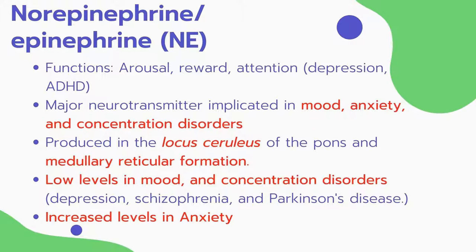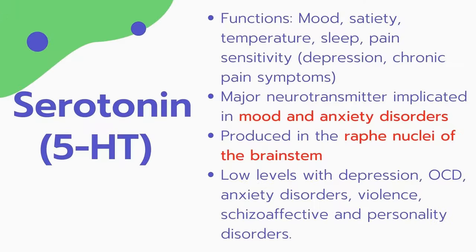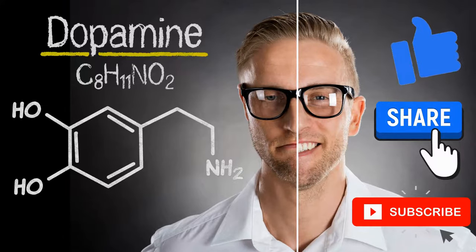The second neurotransmitter is serotonin, also known as 5-HT. Its functions include mood, satiety, temperature regulation, sleep, and pain sensitivity — seen in people with depression and chronic pain. Serotonin is produced in the raphe nuclei of the brainstem. Low levels of serotonin are associated with depression, OCD, anxiety disorders, violence, schizoaffective disorder, and personality disorders.